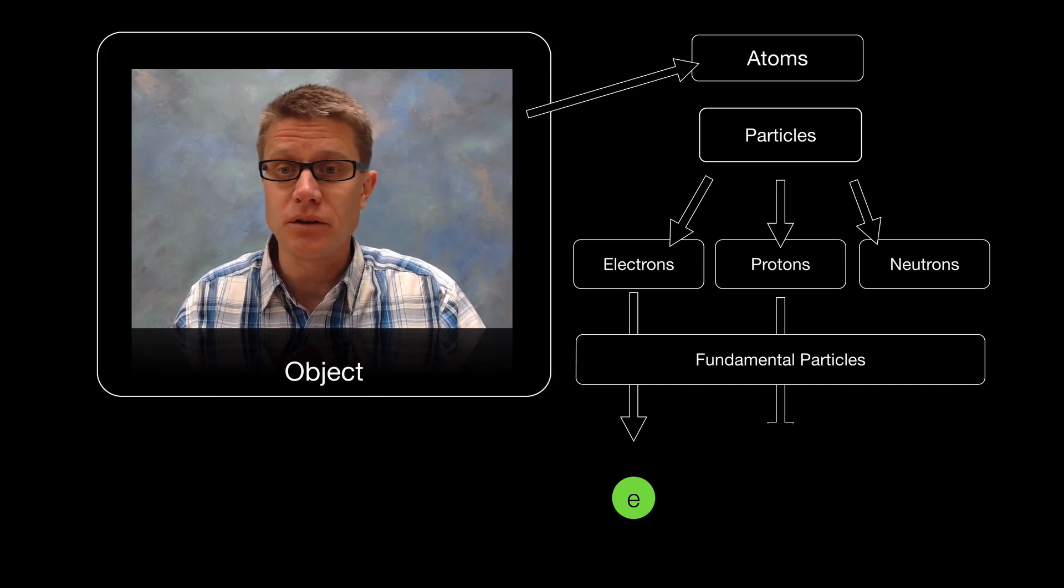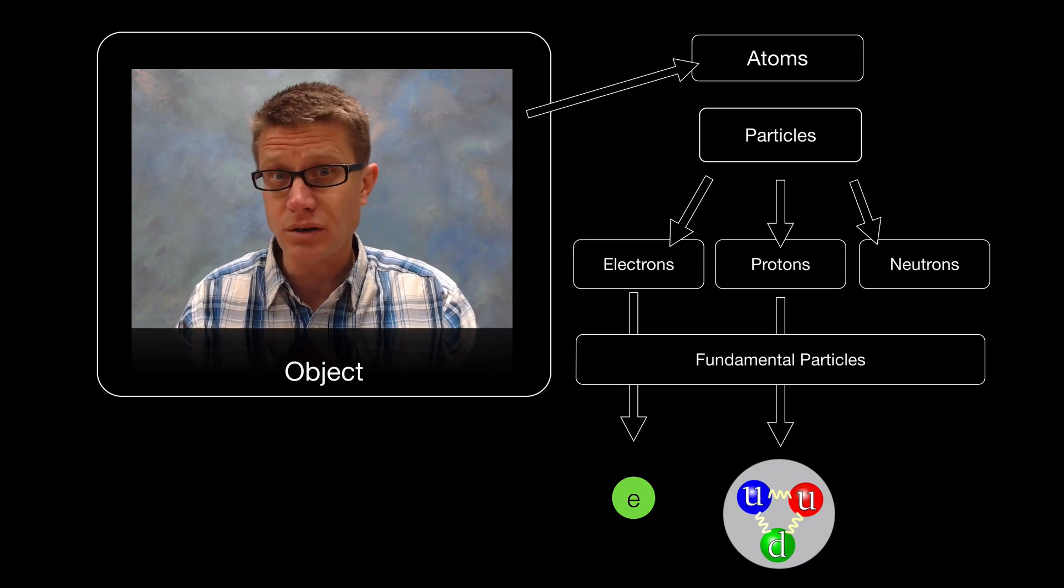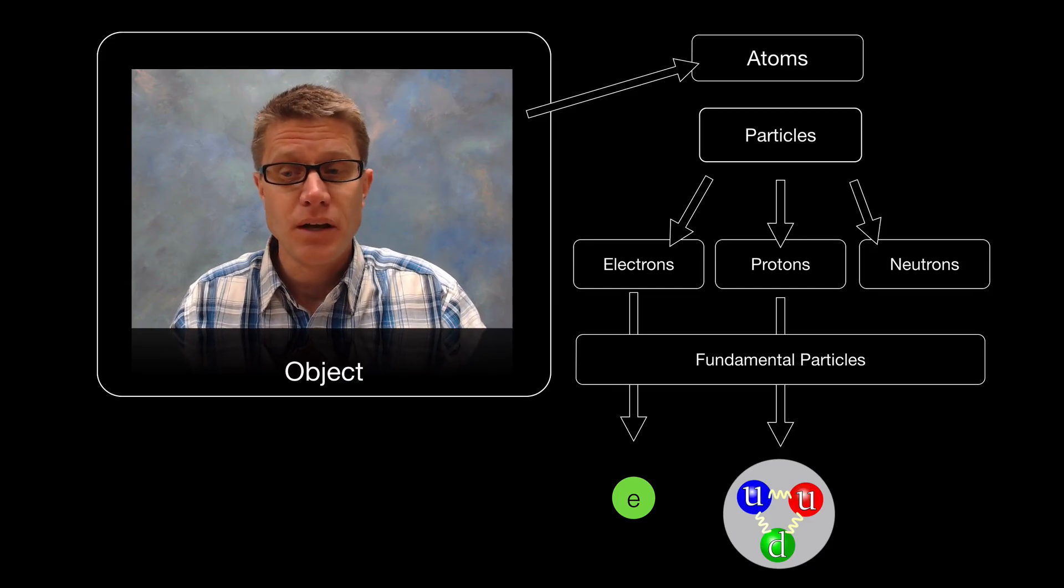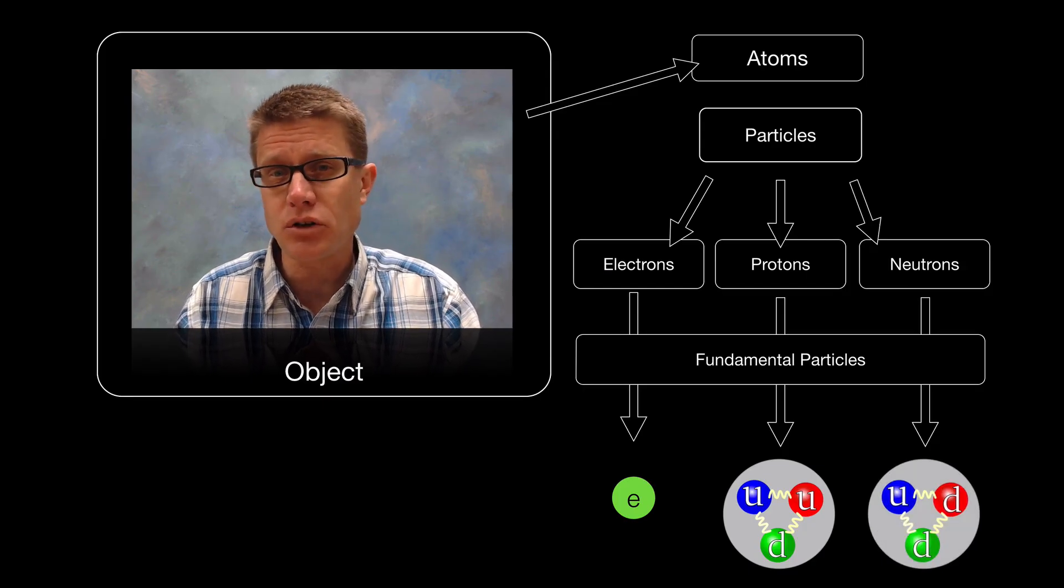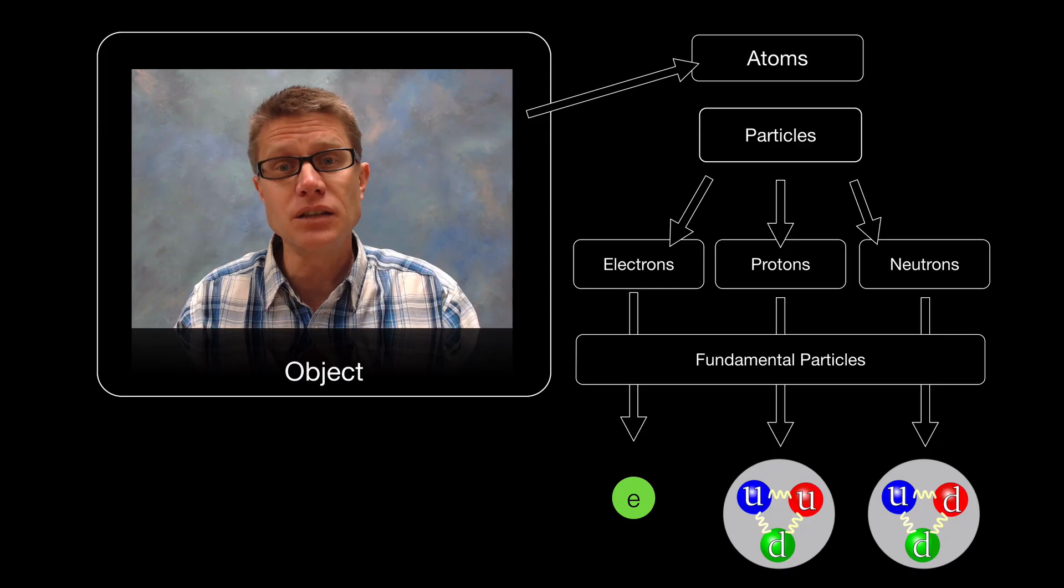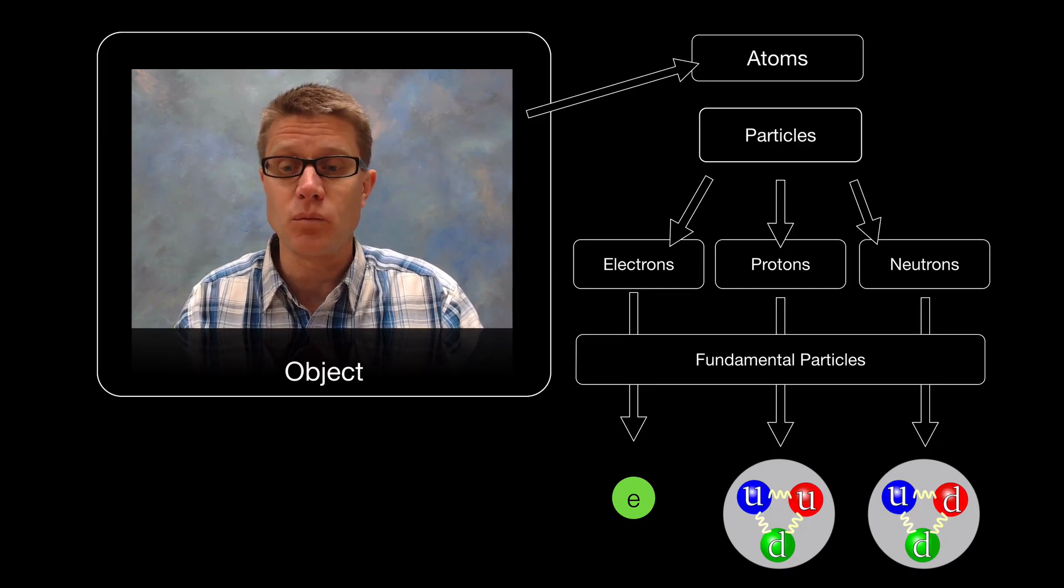Protons and neutrons are actually made up of other fundamental particles. And so a proton is made up of two up quarks and one down quark. And a neutron is made up of two down quarks and one up quark. And depending on the question that we are trying to answer, these parts inside those protons and neutrons may be relevant to the problem we are trying to solve.